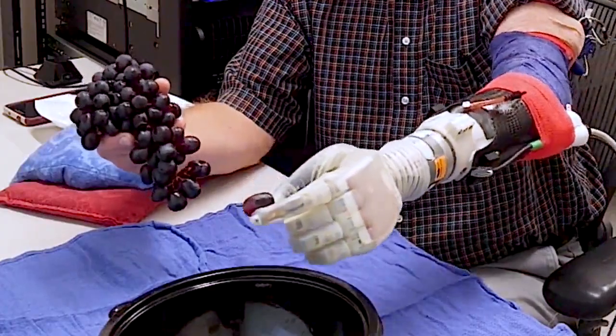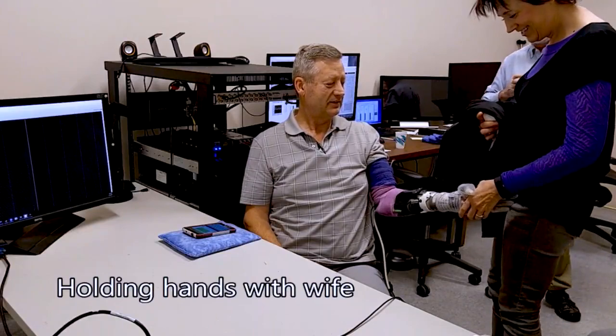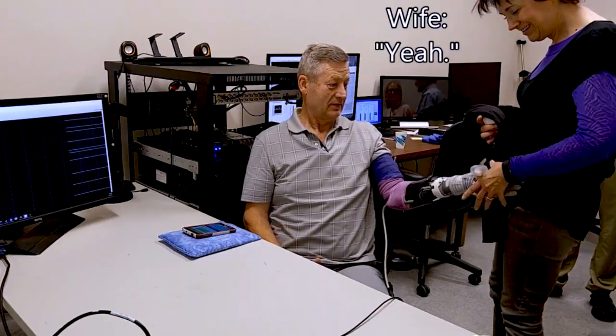Imagine shopping for produce without being able to feel if something is ripe or never really being able to shake someone's hand. This prosthesis and all of the math behind it make those small moments possible for an amputee.